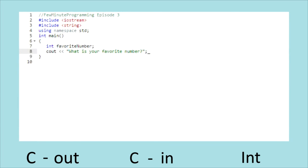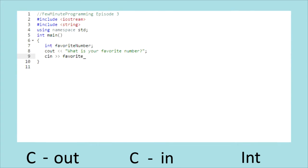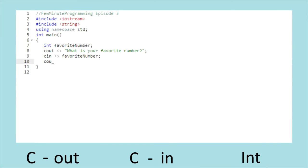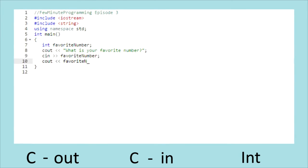cin is used so we can tell the computer what we want it to know. In this case, we want to let the computer know what our favorite number is. And finally, we'll tell the computer to tell us our number back — we'll cout our favorite number.